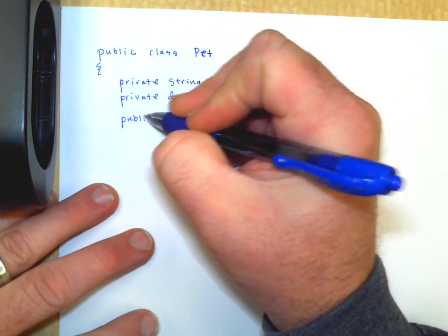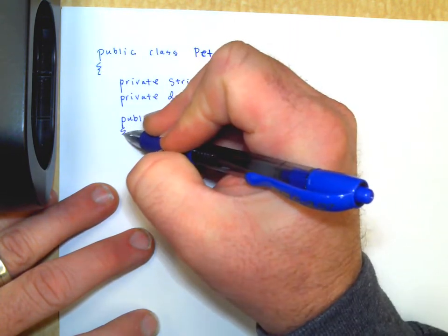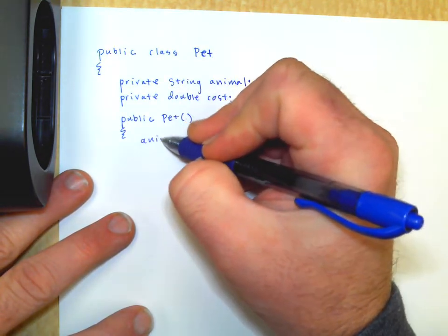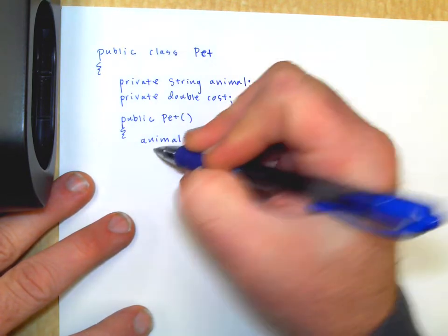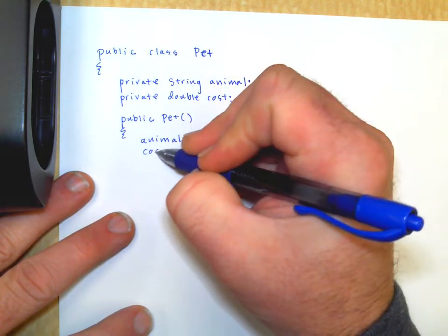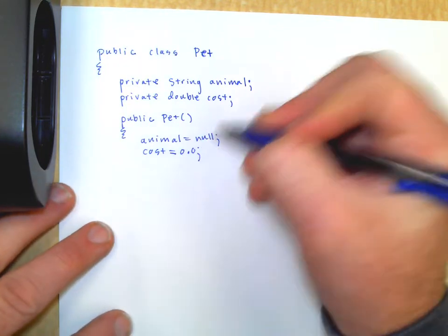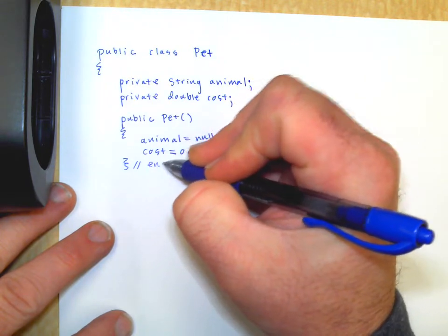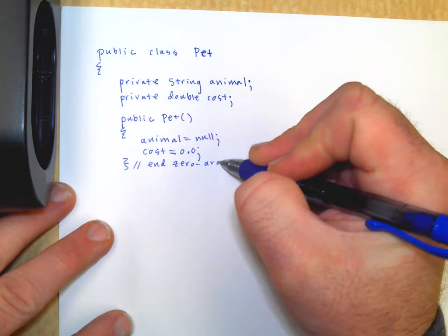Constructors, public pet, we might make a zero arg constructor. A lot of times on AP free response question, it's not necessary. They don't give you one. They don't ask you to do one. But if they did, we could set the animal objects equal to null strings, objects, usually null, integers, usually zero, zero arg constructor.